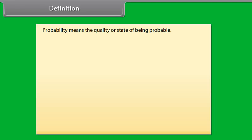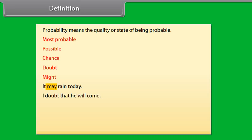Definition. Probability means the quality or state of being probable. In case of probability, we use the words most probable, possible, chance, doubt, might, etc. For example, it may rain today. The word may in the sentence shows probability. I doubt that he will come. Such words involve uncertainty.